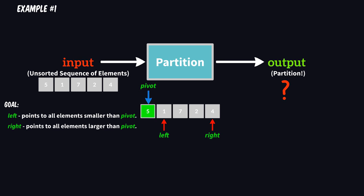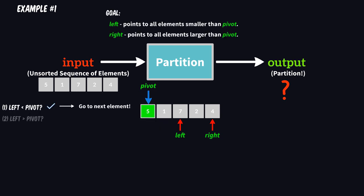So if the left cursor points to an element smaller than pivot, then it's okay, and we can move on with the left cursor one element to the right. If left is greater than pivot, then we should stop moving the left cursor, and we should focus from now on on the right one.